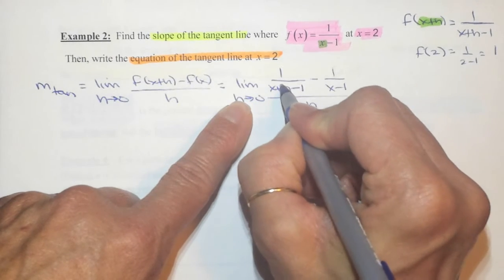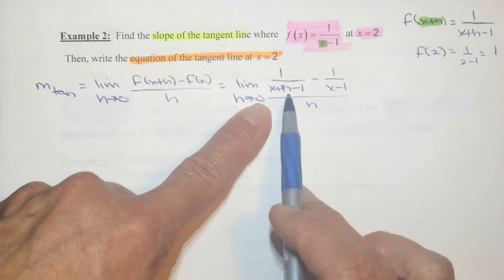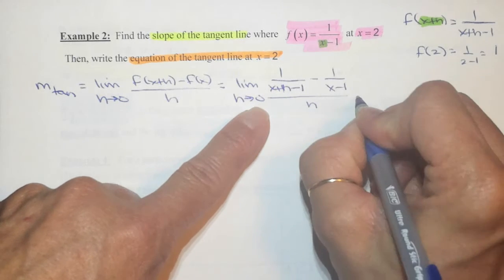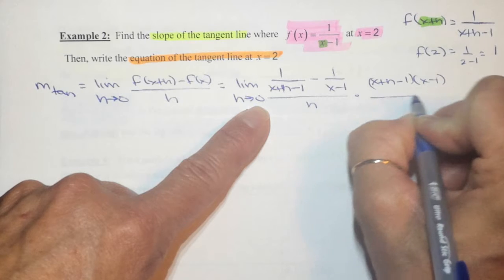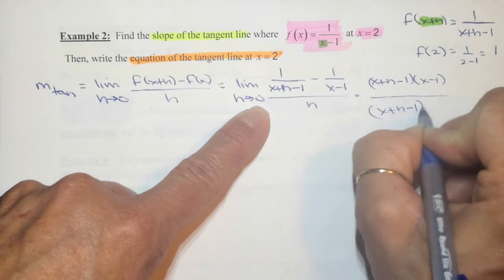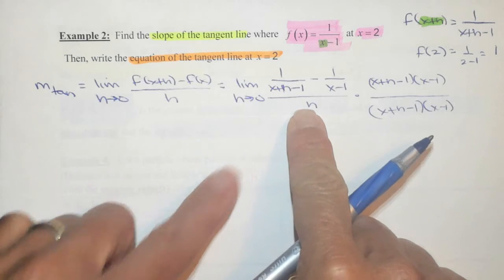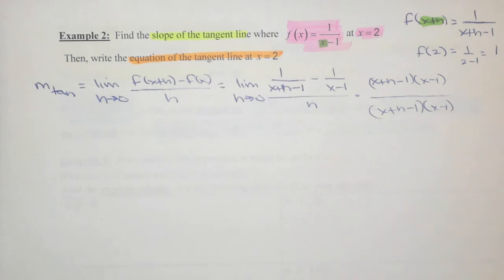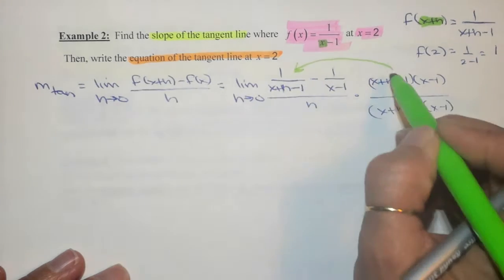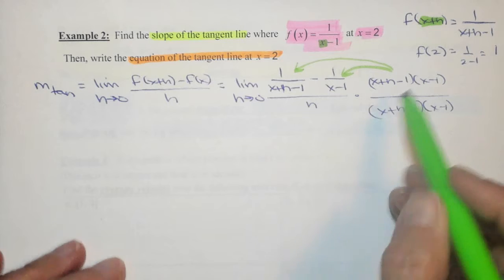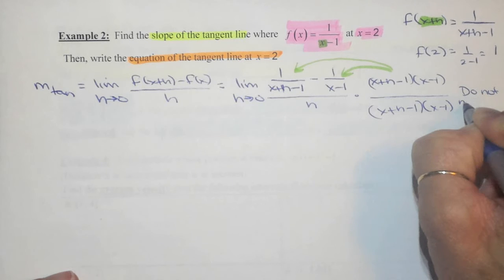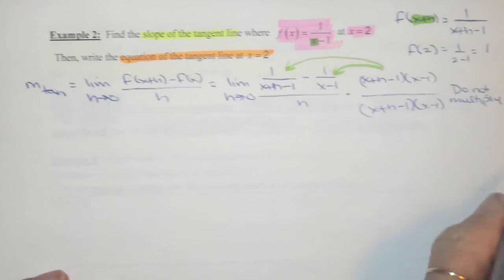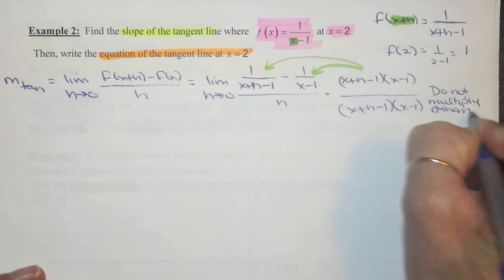If I attempt direct substitution here, I get an indeterminate form. So I need to get rid of this complex fraction by multiplying by the least common denominator — x plus h minus 1 times x minus 1 — over itself. The whole purpose is to get rid of this h. When distributing, do not multiply out the denominators.